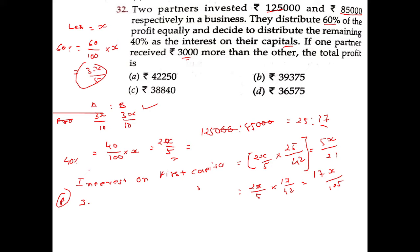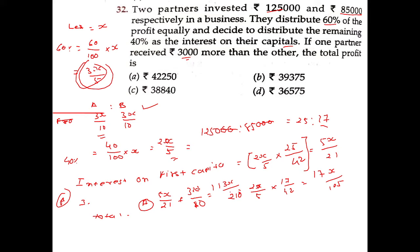Now we have two totals. Total received by the first partner is 5x divided by 21 plus 3x divided by 10, which equals 3x divided by 10. Total received by the second partner is 17x divided by 105 plus x divided by 10.